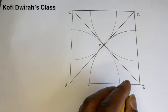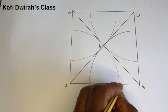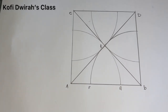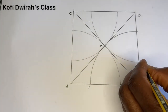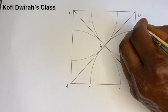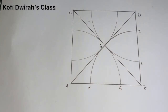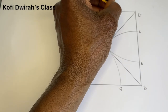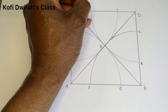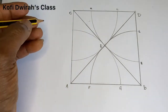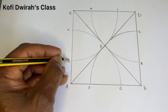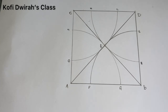We now label the points where the arcs intersect the sides of the square. We have points E, F, G, H, K, L, M, N, and O — note there is no point I, so we go from H to K.